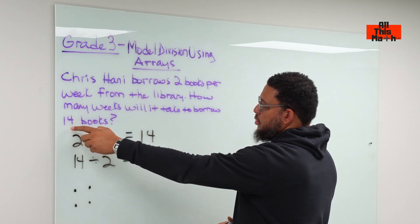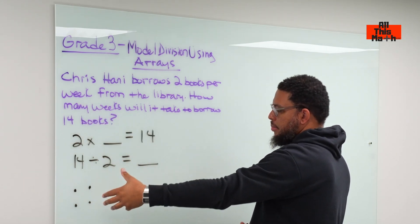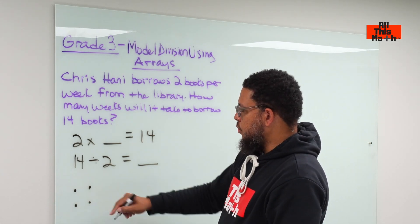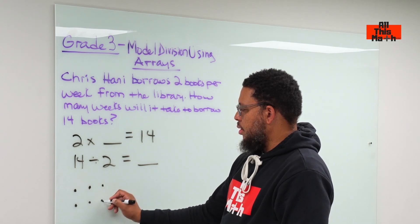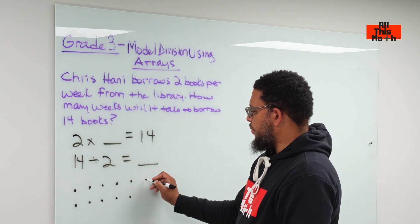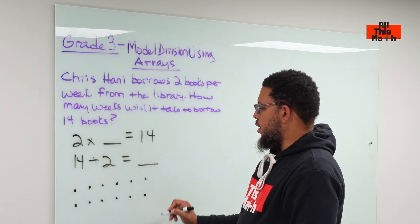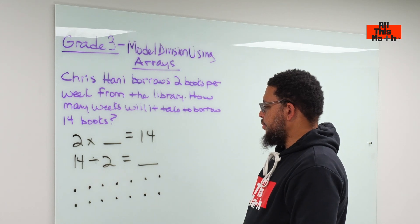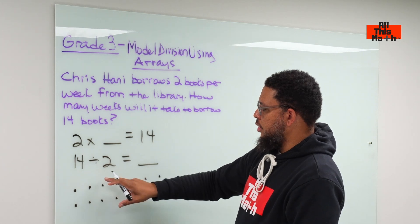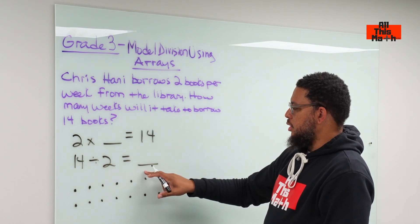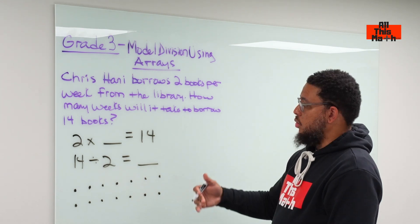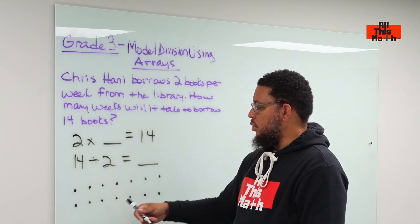We know we're going to have a total of 14 books, and 14 is an even number. Counting the dots: two books the first week, two the second week, third week, fourth week, fifth week, sixth week, seventh week — that gives us 14 dots, which represents 14 books. So it will take seven weeks to borrow a total of 14 books if two books are borrowed every week.